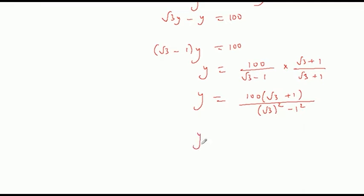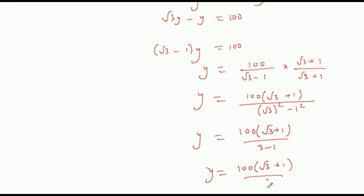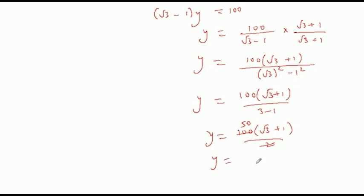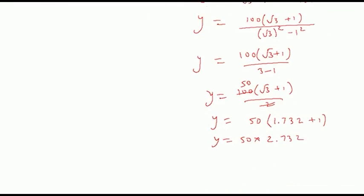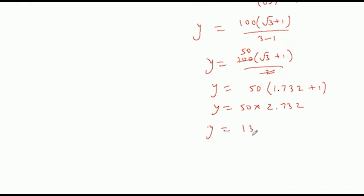So y = 100 · (root 3 + 1) / (3 minus 1) = 100 · (root 3 + 1) / 2 = 50 · (root 3 + 1). Since root 3 is 1.732, root 3 + 1 = 2.732. Therefore y = 50 × 2.732 = 136.6 meters.